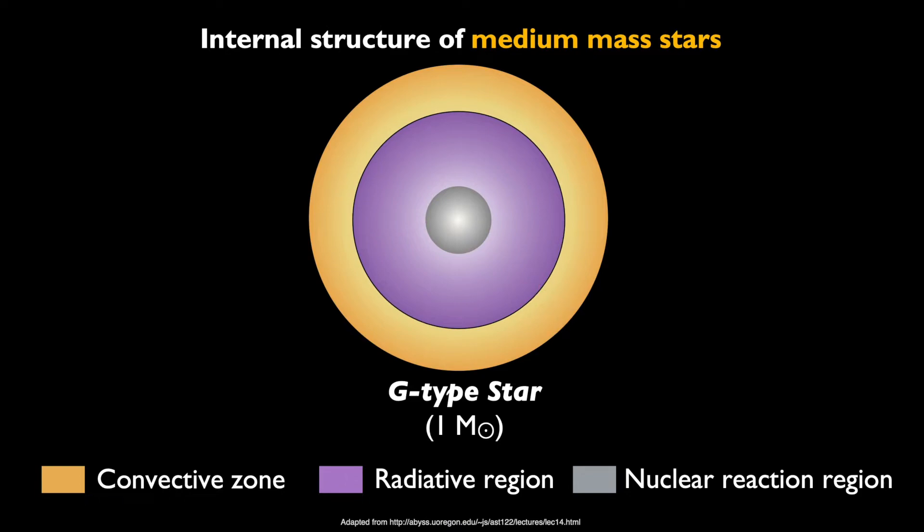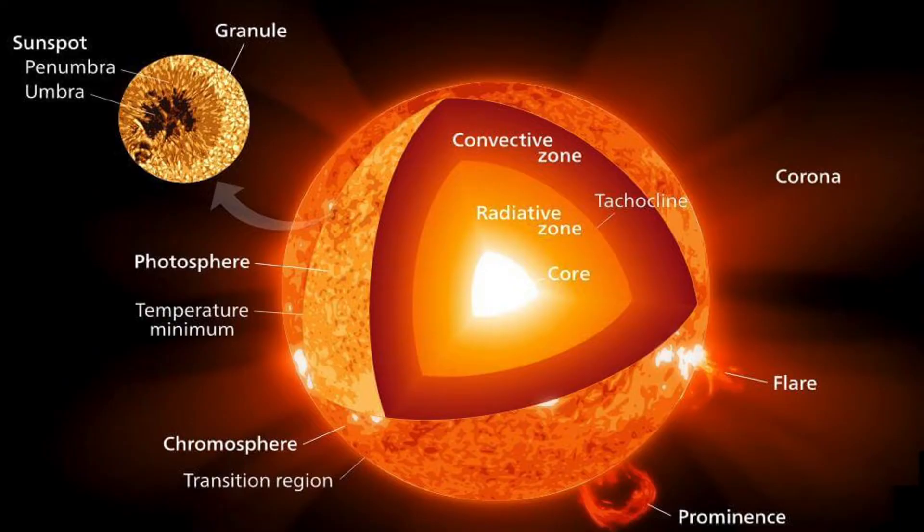In fact, this is identical to the exact structure of the internal layers of our Sun. We have the core at the center, surrounded by the radiative region, which is in turn surrounded by the convection zone, before getting up to the surface of the star, its photosphere.